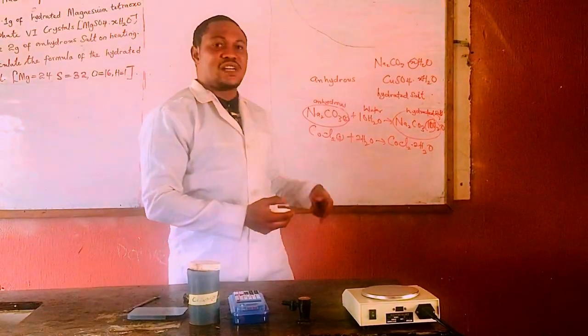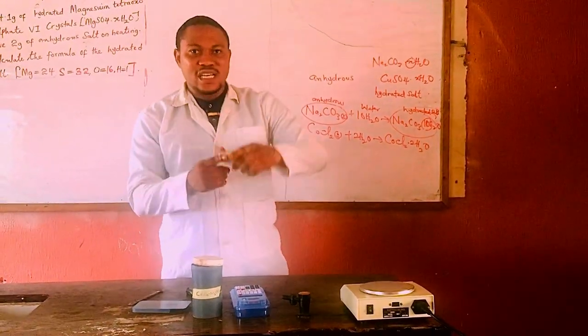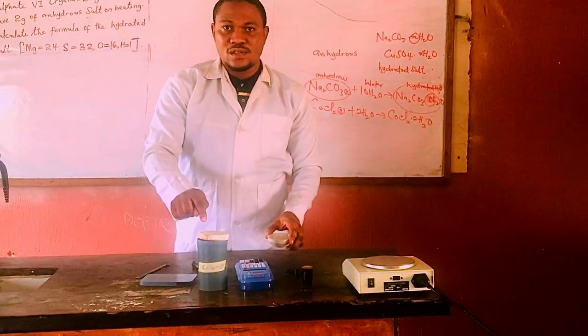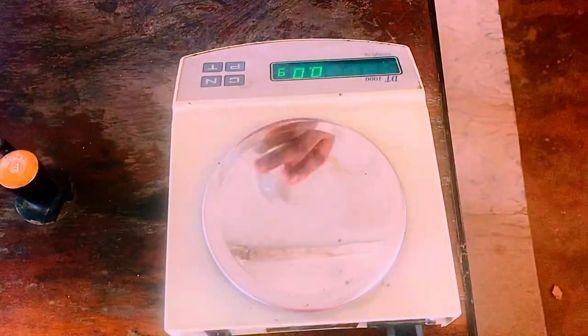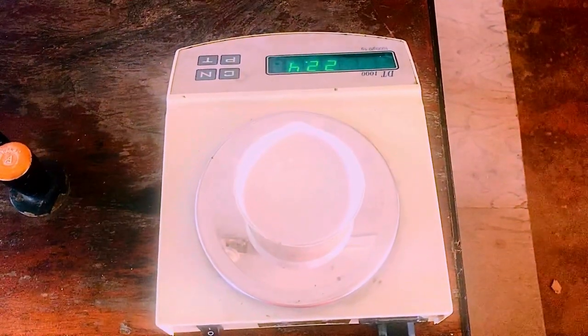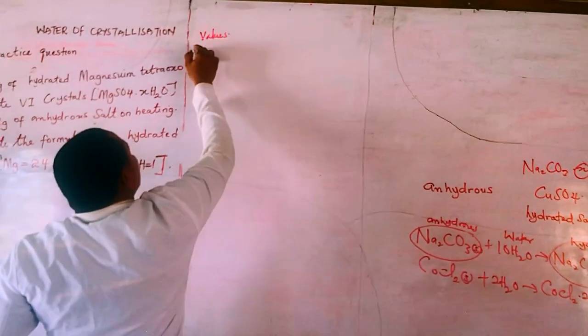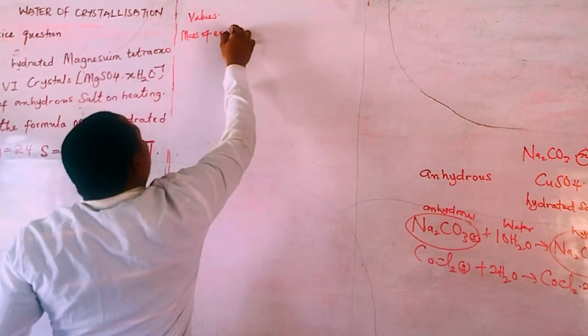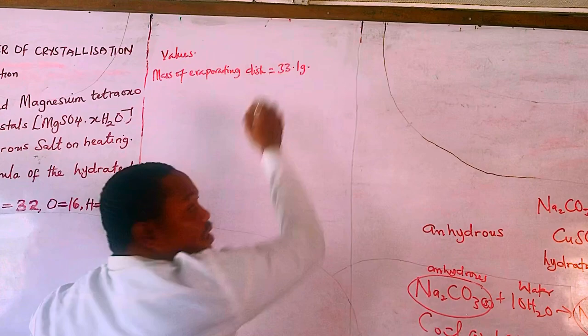This is our evaporating dish and this is the salt whose water of crystallization we want to determine. First, we use the electronic balance — you can see it is reading 0.0 grams, so nothing is on it. Now we measure the mass of our evaporating dish. The mass of the evaporating dish is 33.1 grams.